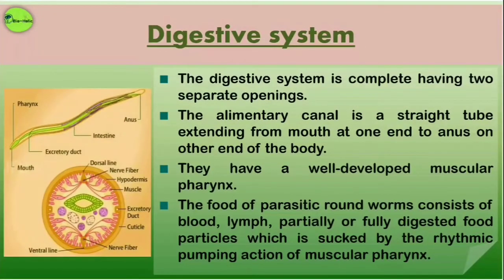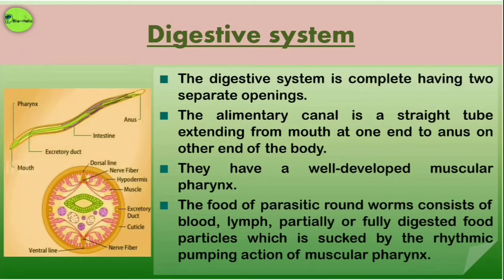The food of the parasitic roundworms consists of blood, lymph, or partially or fully digested food particles, which is sucked by the rhythmic pumping action of their muscular pharynx.